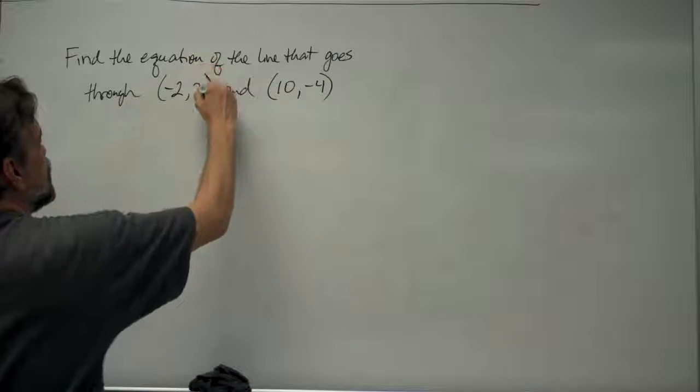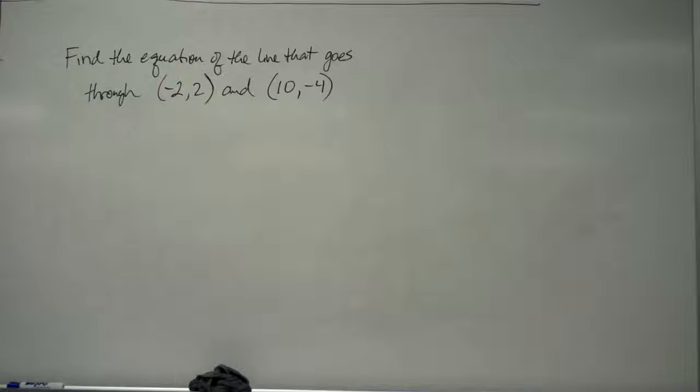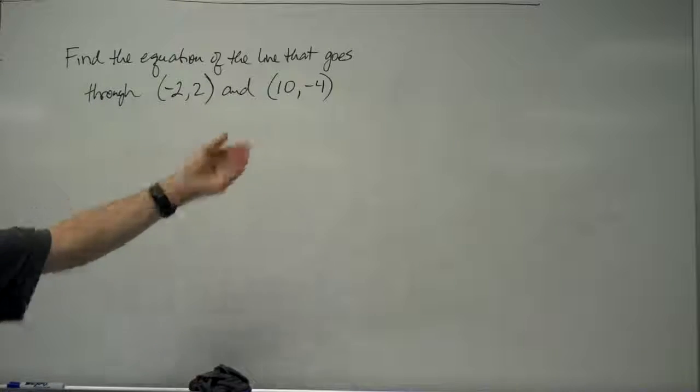Okay, in this video, we're going to be finding the equation of a line that goes through two particular points. In this example, we have the points (-2, 2) and (10, -4).